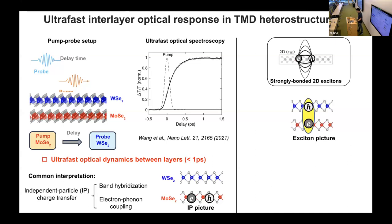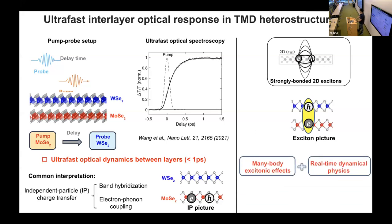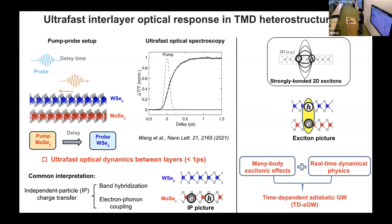This study is very theoretically challenging, because we need to handle both the many-body excitonic effects — which bind the electron-hole pair — and also the real-time dynamical physics at the same time. Both of these are very computationally time-consuming, but NERSC resources give us the ability to study this. We developed a new method called the time-dependent adiabatic GW method, which studies the dynamics between these exciton states.